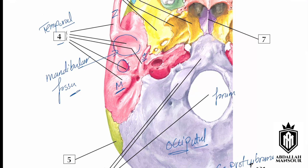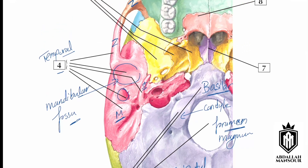Continuing on the occipital bone, you can see the foramen magnum, the occipital condyle (condylar part), and the basilar part of the occipital bone. There are many foramina here explained in previous or later videos. Visible foramina include the stylomastoid foramen, foramen ovale, foramen spinosum, foramen lacerum, and the carotid canal.